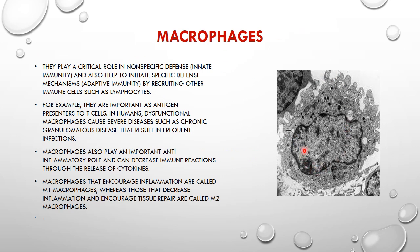This is the electron micrograph of the macrophage. Macrophages play a critical role in non-specific defense or innate immunity, and also help initiate specific defense mechanisms — adaptive immunity — by recruiting other immune cells such as lymphocytes. They are important as antigen presenters to T cells. Dysfunctional macrophages cause severe diseases such as chronic granulomatous disease resulting in frequent infections. Macrophages that encourage inflammation are called M1 macrophages, whereas those that decrease inflammation and encourage tissue repair are called M2 macrophages.